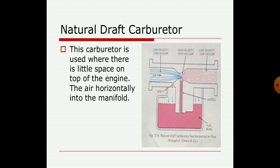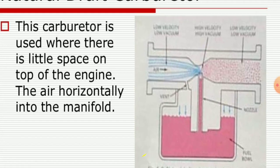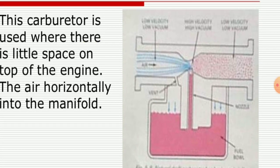In the natural draft carburetor, it is used where there is little space on top of the engine and the air flows horizontally into the intake manifold. In the diagram you can see the air passes through the manifold, and a nozzle-shaped arrangement raises the pressure of the fuel going to the combustion chamber. Air is mixed with the fuel, and this air-fuel mixture is essential as a rich mixture for combustion.